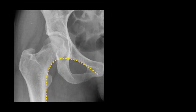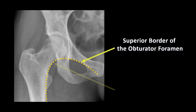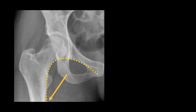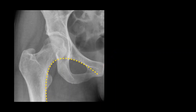Shenton's line. It is an imaginary curved line drawn along the inferior border of the superior pubic ramus or superior border of the obturator foramen and along the inferomedial border of the neck of the femur. In X-ray films, it should be continuous and smooth. This line gets disrupted in neck fracture and hip dislocation.